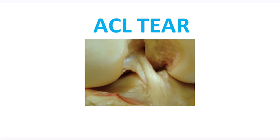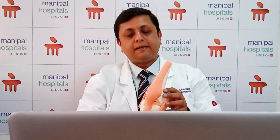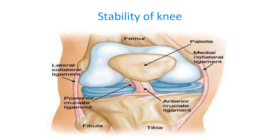Today I will be talking on one of the most common injuries of the knee joint, which is the ACL injury, also called anterior cruciate ligament injury. First, coming to the anatomy of the knee joint — the knee joint includes the thigh bone as well as the leg bone.